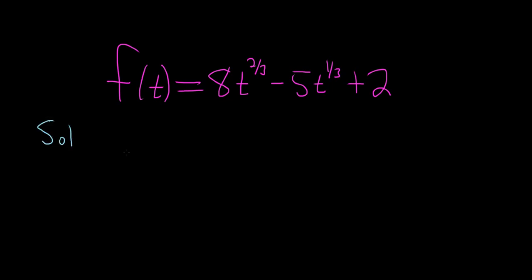Solution. So the derivative is f prime of t and to use the power rule basically we have the 8 that will hang out and then you just take the number that's here and you bring it down and put it in the front.